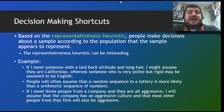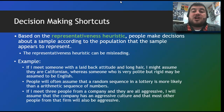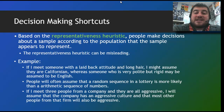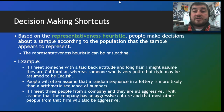The representativeness heuristic is when people make decisions according to a sample that appears to represent the broader population. So, if I meet someone with a laid-back attitude and long hair, I might assume they're from California. Or someone who is very polite but rigid, maybe English or from Britain. People will also assume that a random sequence in a lottery is more likely than an arithmetic sequence of numbers, but each one has the same probability. If I meet three people from a company who are all aggressive, I'll assume the company has an aggressive culture, but that's not necessarily true — it's just those three people.